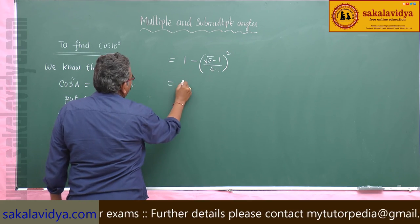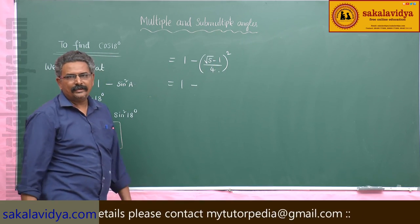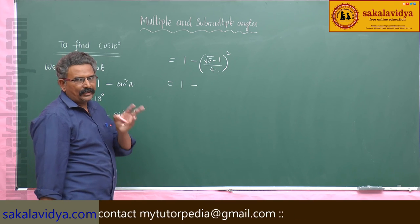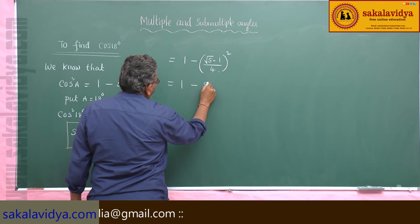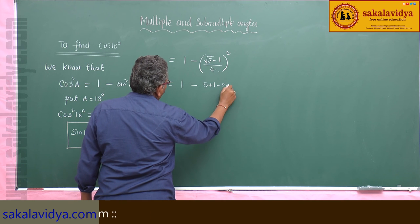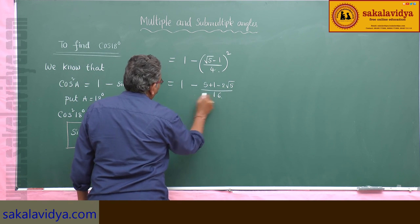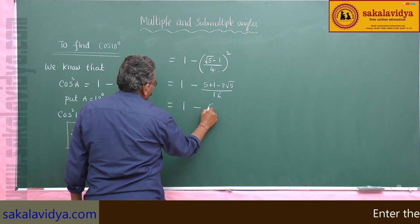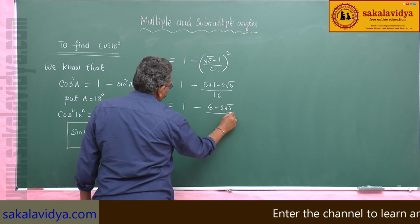This is 1 minus (A minus B) whole squared, which expands as A squared plus B squared minus 2AB. So we get (5 + 1 minus 2√5) divided by 16. This gives 1 minus (6 minus 2√5) divided by 16.